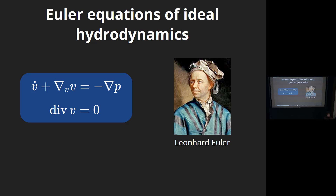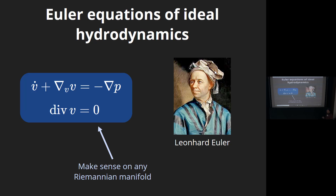Let's start with the Euler equations - ideal hydrodynamics, incompressible fluid, no viscous forces. V is a vector field on the domain and P is the pressure. I tend to think of this as just a Lagrangian multiplier to ensure that V is a divergence-free field, so that the fluid is incompressible. These equations were formulated already by Leonard Euler, as you know, a long time ago. But the point I want to make is that these equations actually make sense on any Riemannian manifold, because if you have a Riemannian structure, you know what the covariant derivative is.